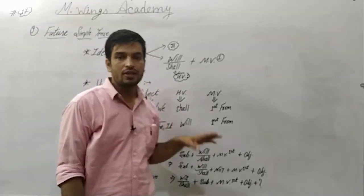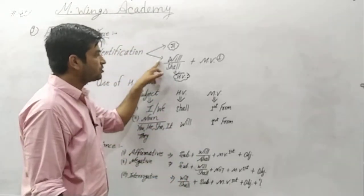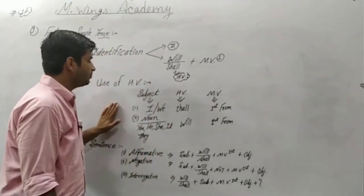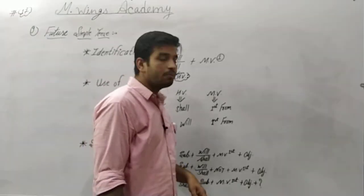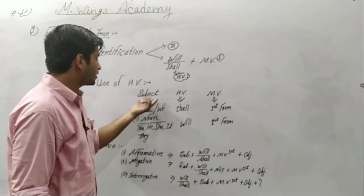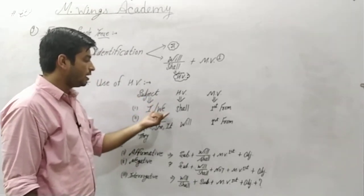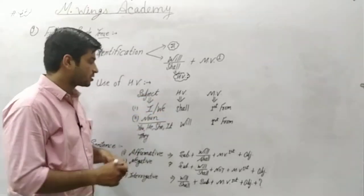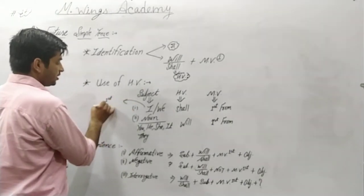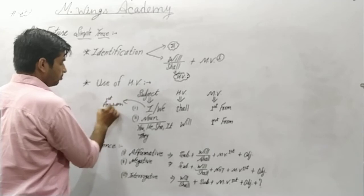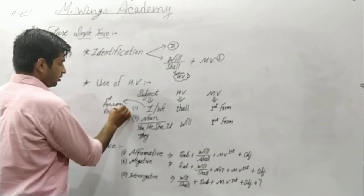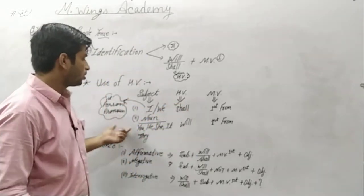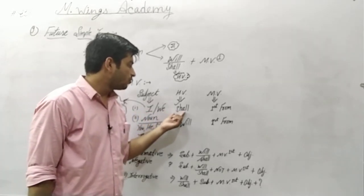The second point is the use of helping verbs in this tense. We have two types of helping verbs: 'will' and 'shall'. The decision of which helping verb to use depends on the subject. If the given subject is 'I' or 'we' — that is first person — then use 'shall' with first person pronouns.